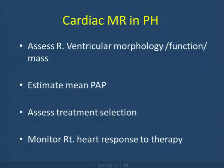Cardiac MR is quite useful in assessing patients, particularly for right ventricular morphology, function, and mass. These are prognostic factors used in treating patients with idiopathic pulmonary hypertension. It can also help us assess the mean pulmonary arterial pressure, and is used in selected patients to assess both treatment response and monitor right heart response to therapy.